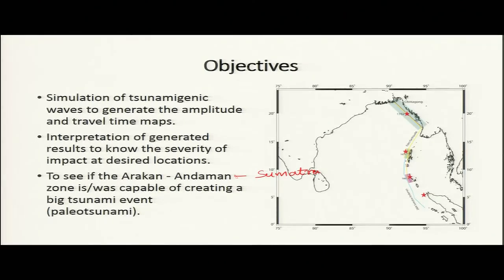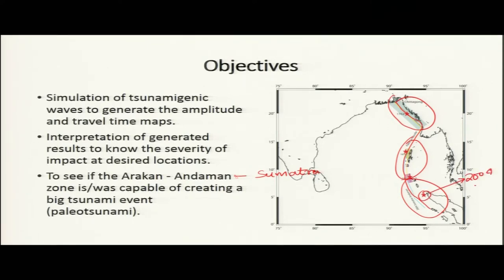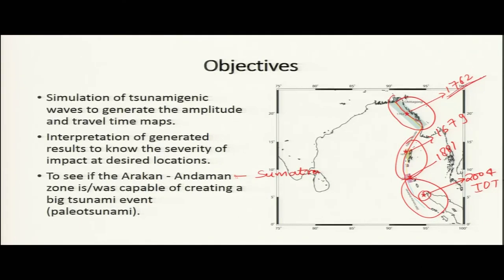This map shows the Arakan, Andaman, and Sumatra parts — the subduction zone, which is arcuate in nature. The epicenter of the 2004 Indian Ocean tsunami is marked here, along with a few more tsunamis: the 1881 tsunami, the 1679 tsunami, and the Arakan tsunami of 1762. The 1762 tsunami was underestimated and later studied by Cummins, which will be discussed in the following slides.